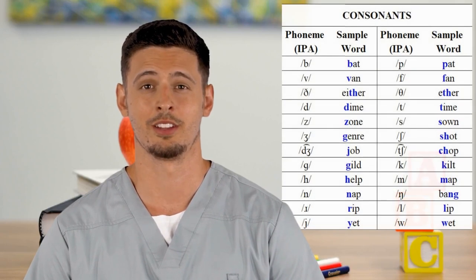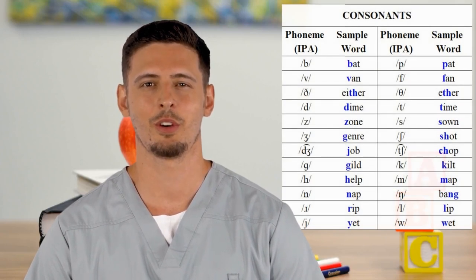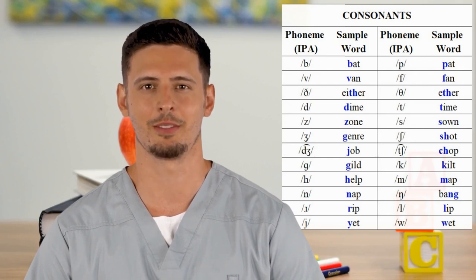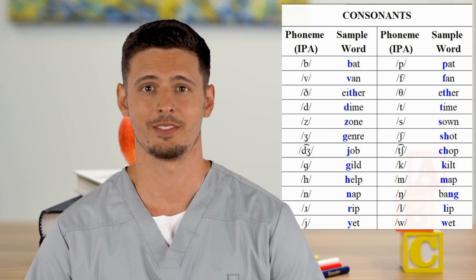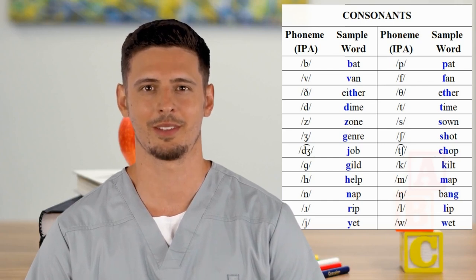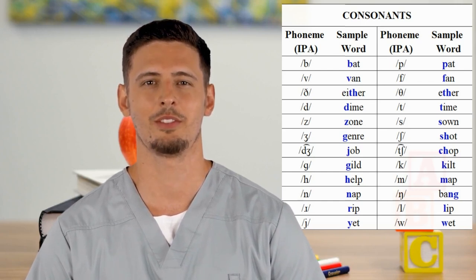Finally, the consonants of English are sampled in these words, read in rows: bat, pat, van, fan, ether, ether, dime, time, zone, son, genre, shot.